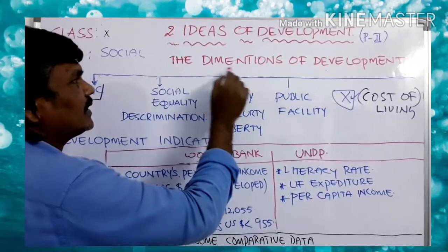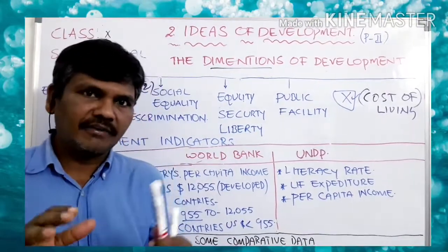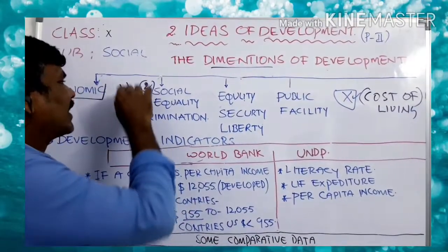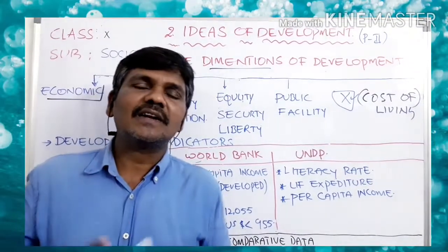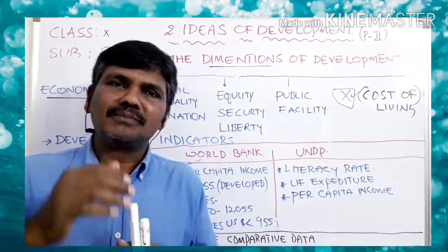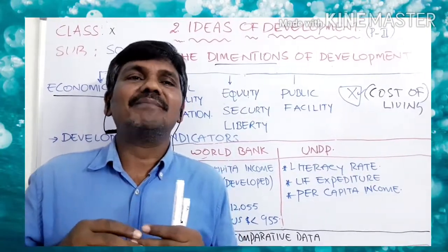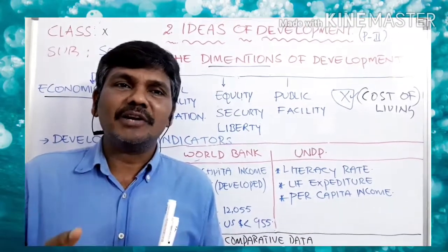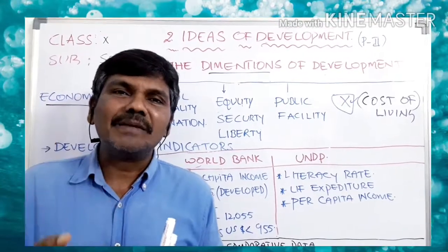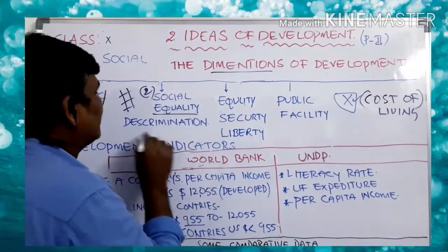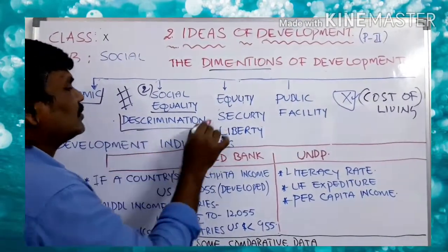The second dimension is social equality. India has a ladder-type caste system. Most lands are within the hands of some sections of people. When these lands are distributed, poor caste people can also be treated equally. When economic equality takes place, social equality will also take place, and that leads to removing discrimination.